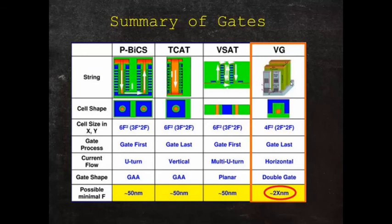A summary of the gates. We have the PIPE-BICS, which runs the current in a U-shape. It's a gate-first design. We build the gate first. The current takes a U-turn. Gate all around. The TCAT is a gate-last design. The gate is constructed last. The current flows vertically, and it's a gate-all-around design. And with the vertical stack, you have the current making a multi-turn, and it's a planar array. All of these are working right now at the 50 nanometer node.